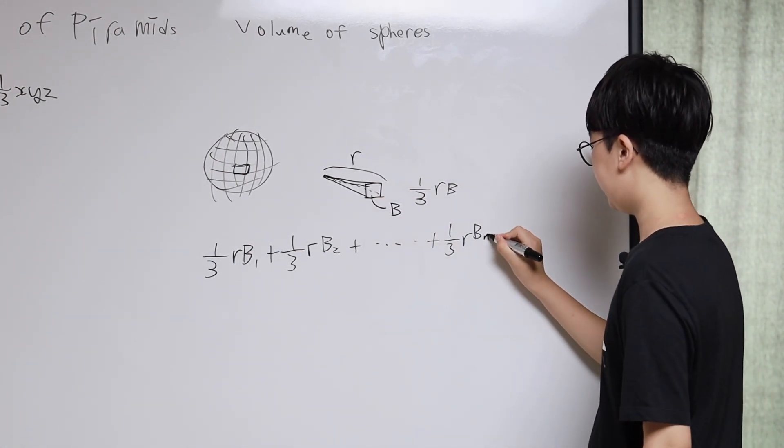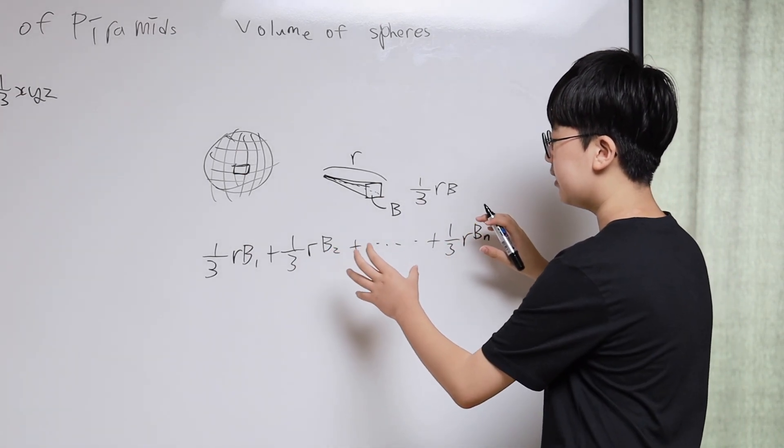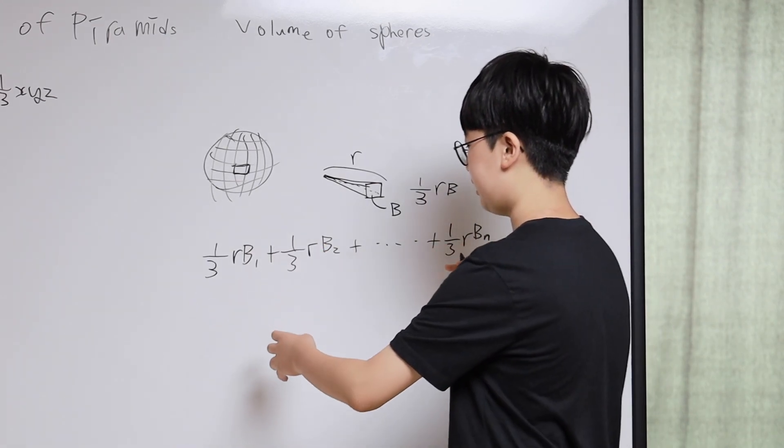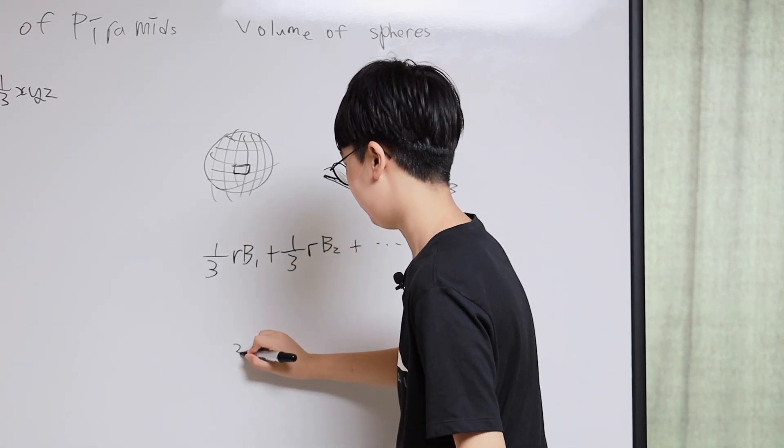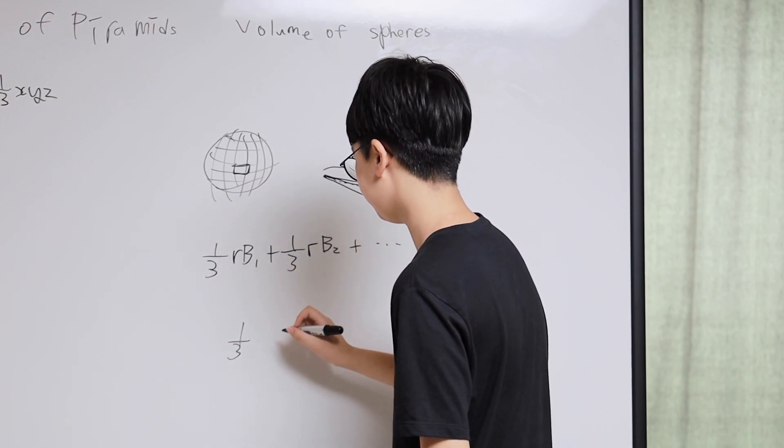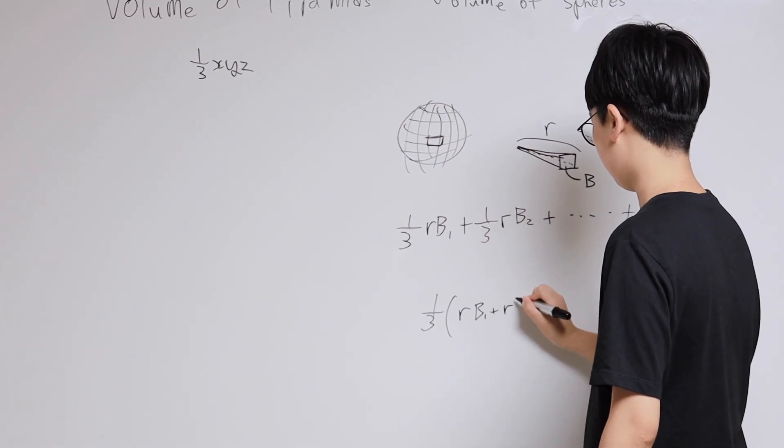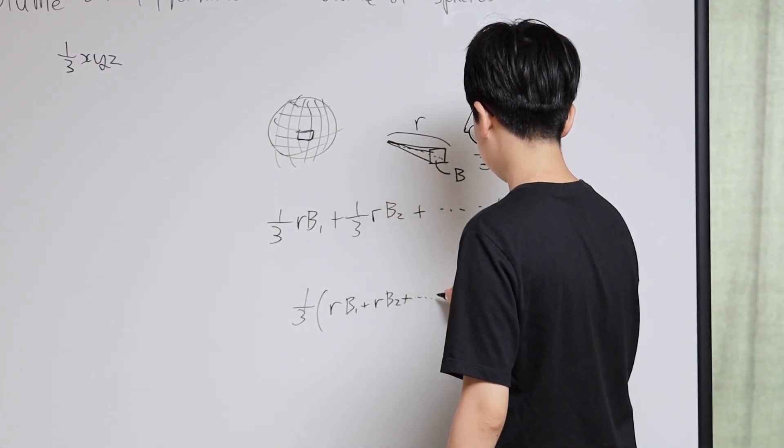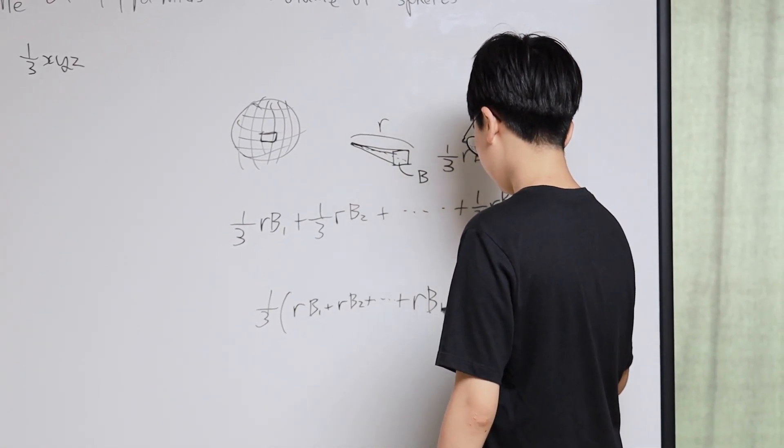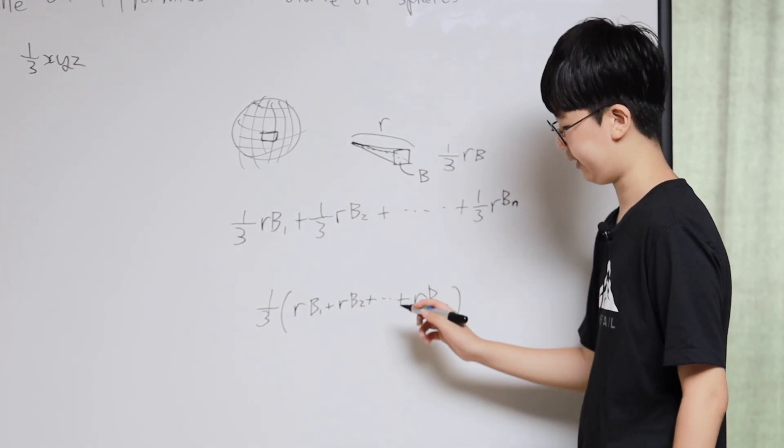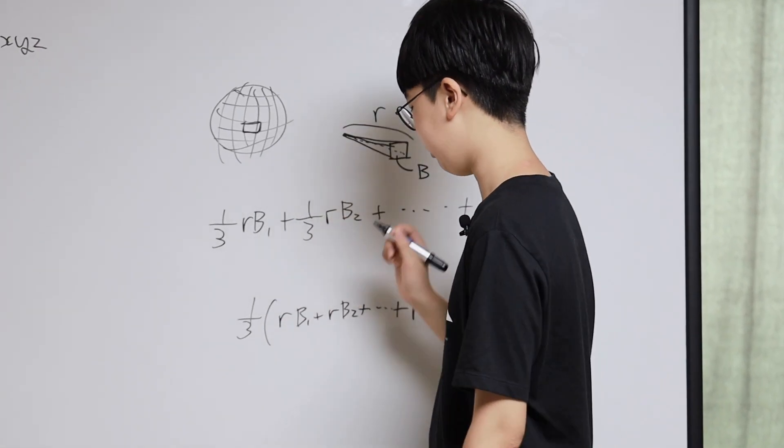Now we are going to pull out all of the 1 over 3's out of this equation by simplifying it. Also, we are going to pull out all of the R's out too.